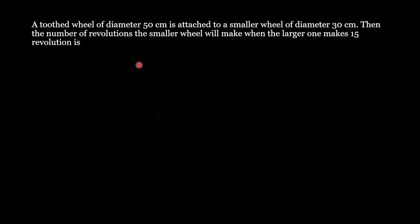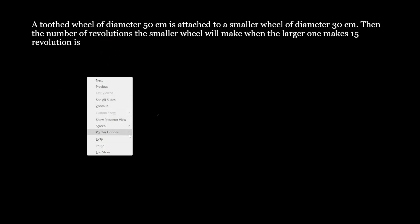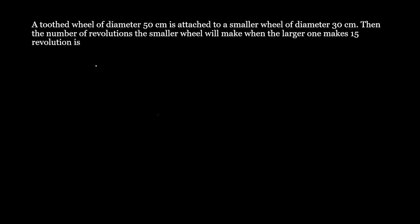This is a straightforward question — we can compare it with proportions, specifically inverse proportions, to solve it easily. For a single wheel, the number of rotations made is given by distance traveled divided by 2πr.